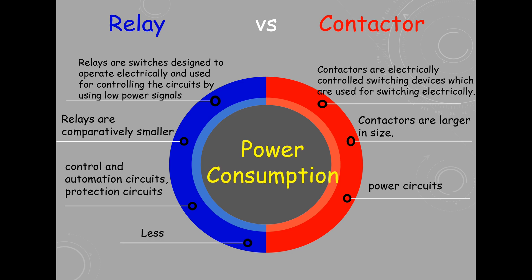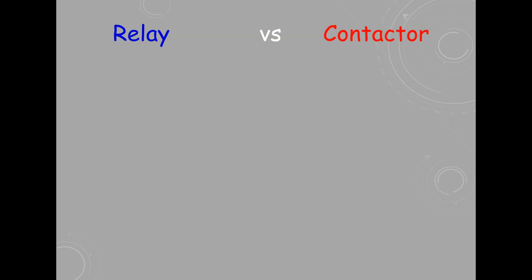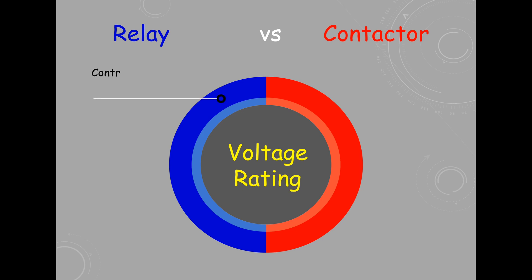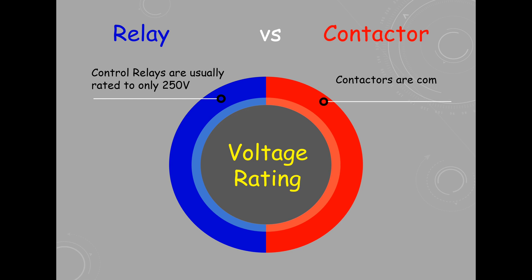The power consumption of a relay in circuits is very less, while the power consumption of a contactor is comparatively more. Relays are usually rated to 250V only, whereas contactors are commonly rated for up to 1000V.